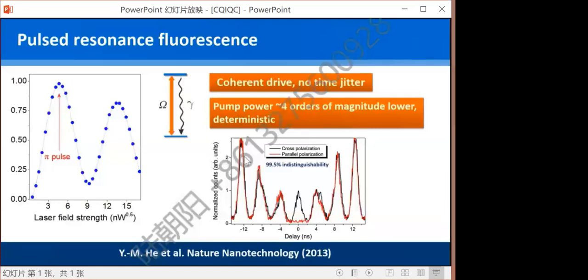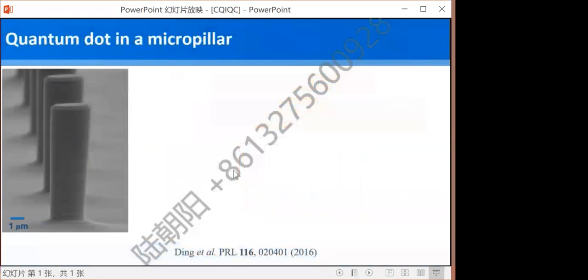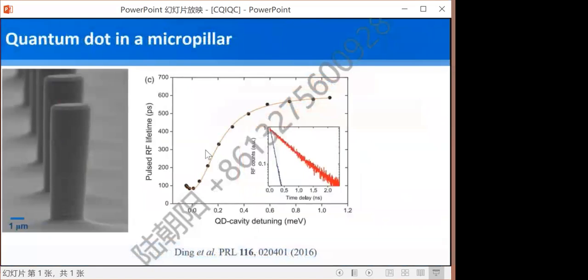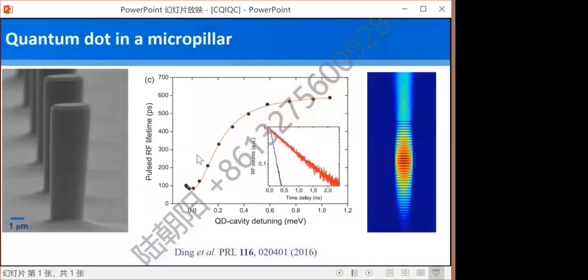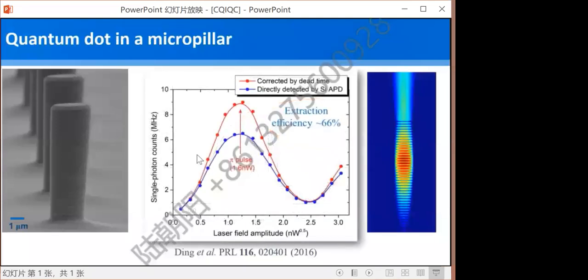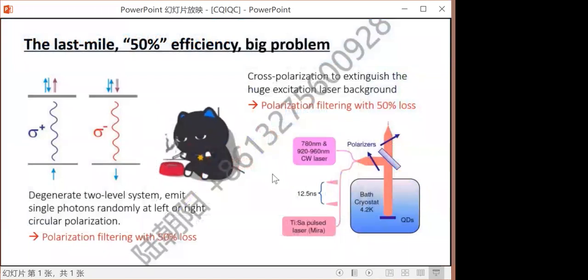The next problem is photon collection. To make emission predominantly directional, we couple the emitter in a micro-pillar cavity. The emitter lifetime is shortened from about 700 picoseconds to about 80 picoseconds, with a Purcell factor of about 10. The extraction efficiency is increased from one percent in the bulk structure to about 66 percent. We have a better number now compared to five years ago. This is encouraging because in the extraction efficiency, but extraction efficiency is not everything. It's not the end of the story.